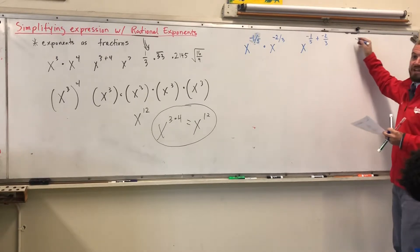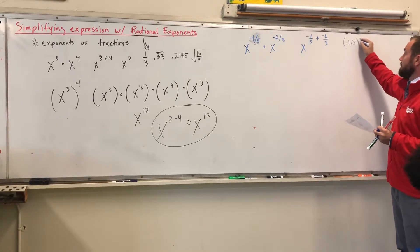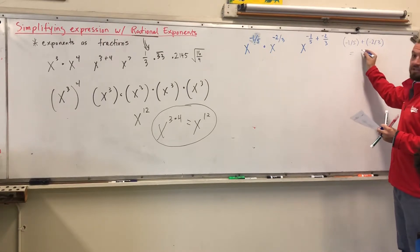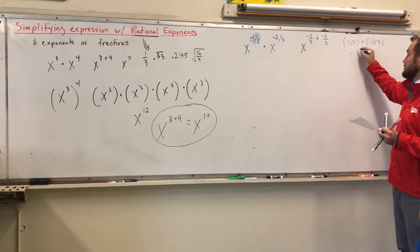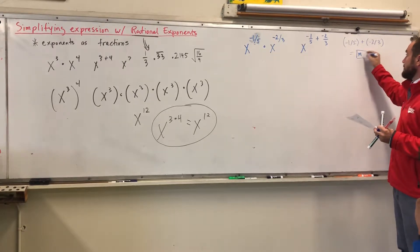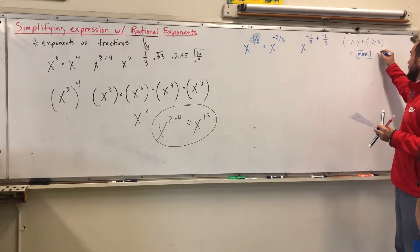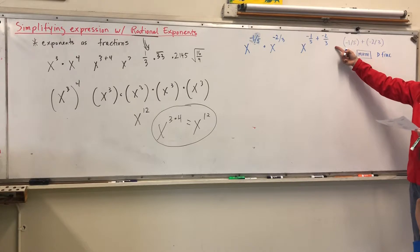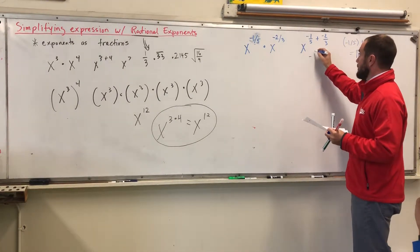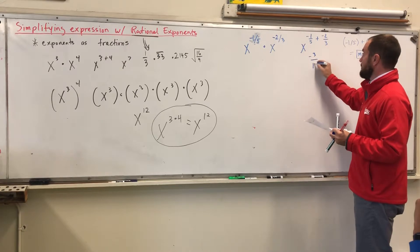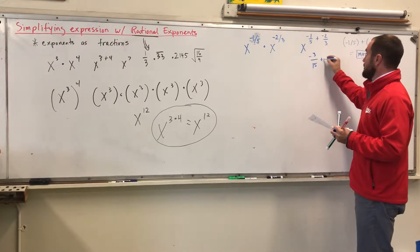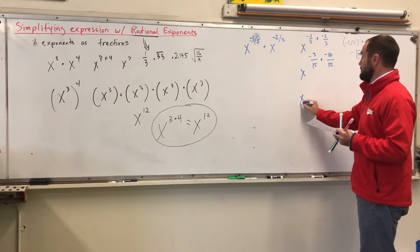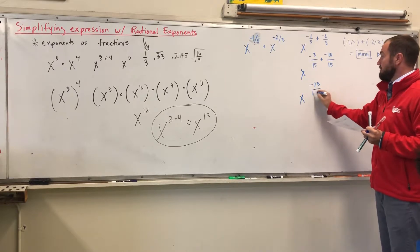Now, put this on a TI-83, negative one-fifth plus negative two-thirds. Get a result. Let it be a decimal. You can always go to your math button and then use fraction, and that'll get you your exponent that you can use, or you can simply find a common denominator, negative three over 15 plus negative 10 over 15, which gives me X negative 13 over 15.